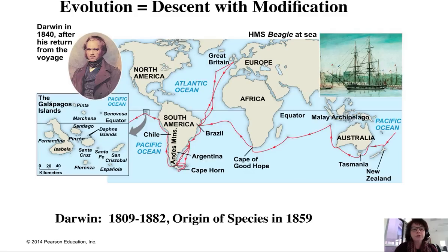Evolution can be described as descent with modification. We'll introduce some other buzzwords, but that's a great description to start with.